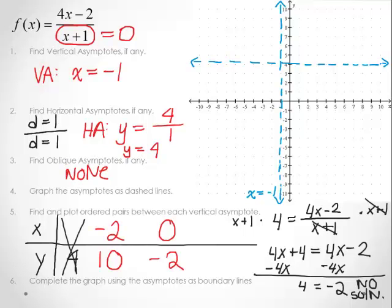Let me plot these two points. (-2, 10) would be up here and (0, -2) would be right here. Now it's time to construct our graph. Starting with my first point, I go down and curve around towards the horizontal asymptote. On the right, it goes up towards the vertical asymptote. Then starting with the other point, on the left side it goes down towards the vertical asymptote, and on the right side it goes up and levels off with the horizontal asymptote.